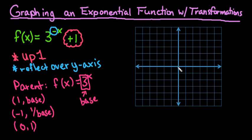So it would go through 1 comma 3. I'd go over 1, 1, 2, 3. It goes through 0, 1. And then it would go through negative 1, 1 third. So this would be the parent function here, would go through these points. If you want to draw the graph of the parent function to help you with the transformations, you always can.